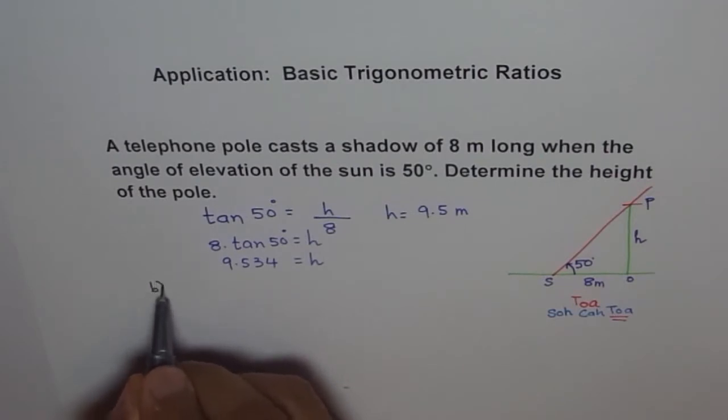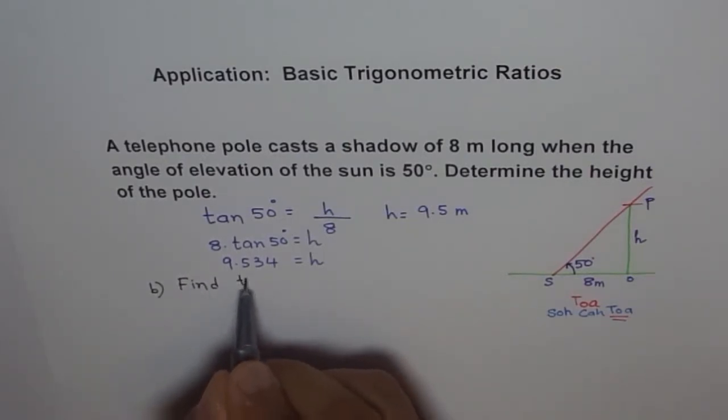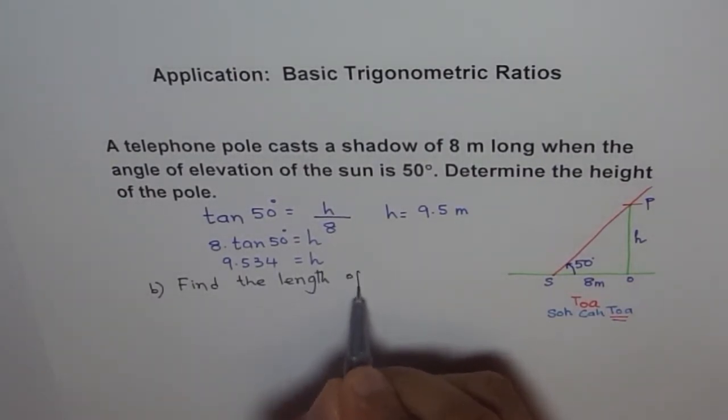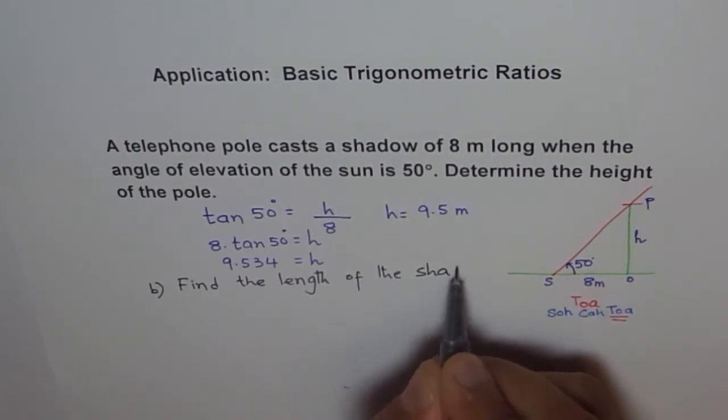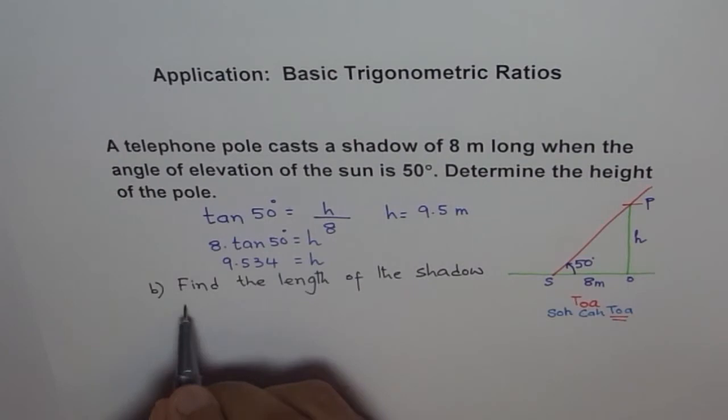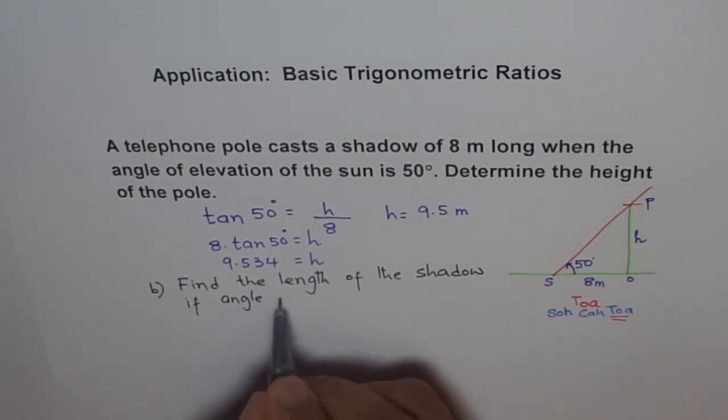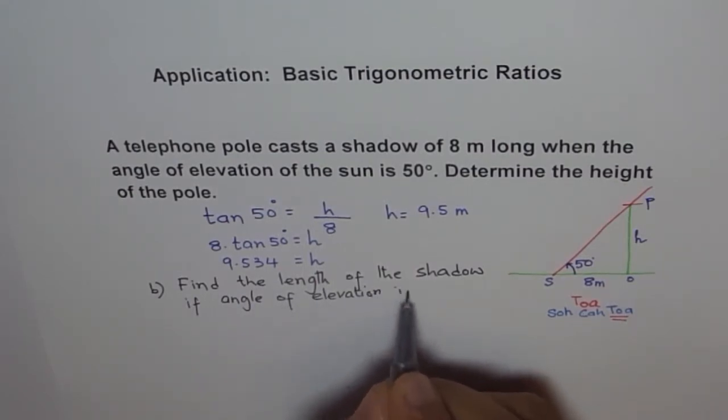Let's do part B of the problem: Find the length of the shadow if the angle of elevation is 75 degrees.